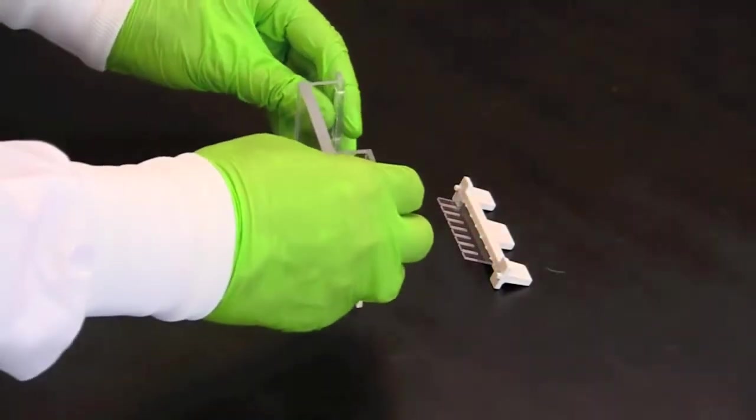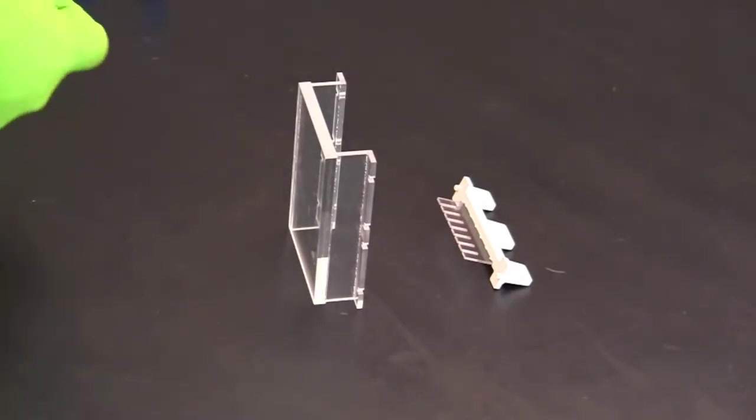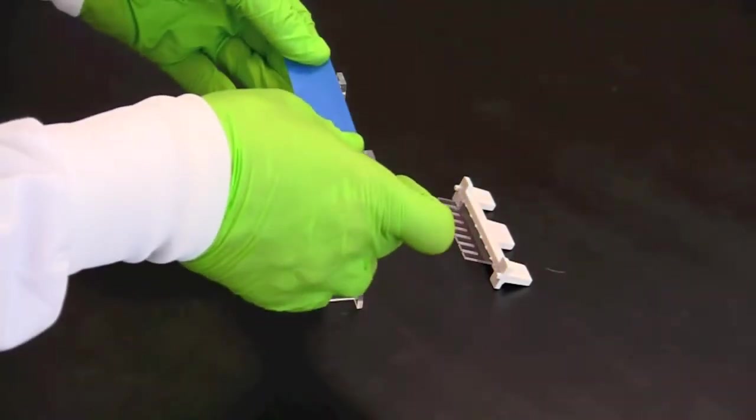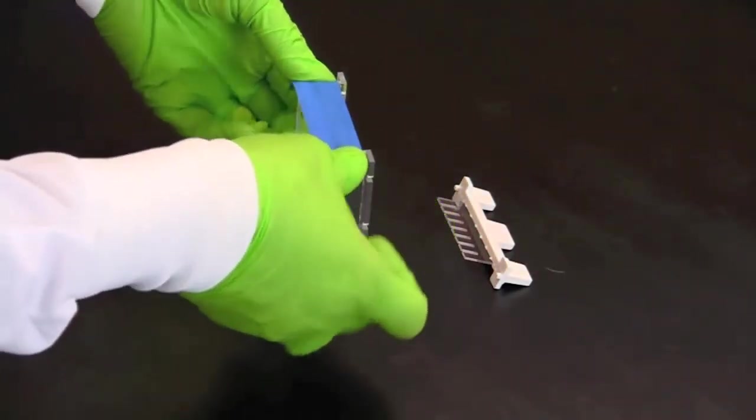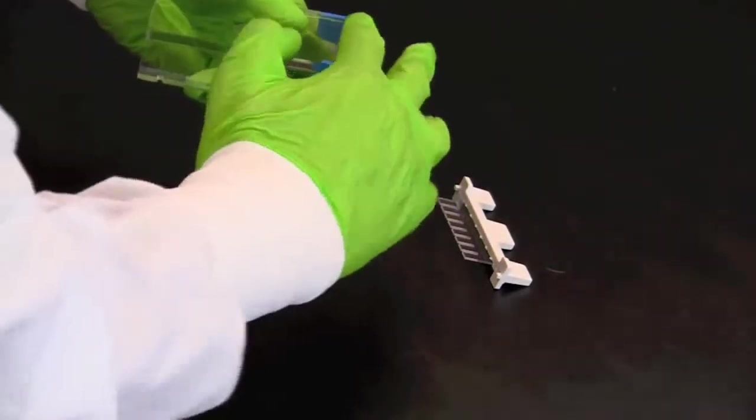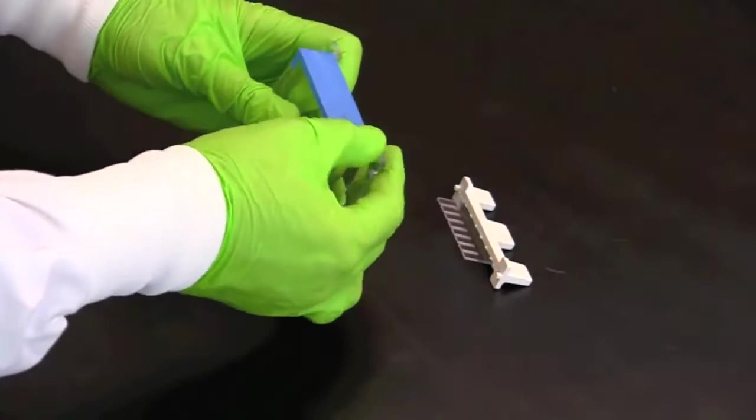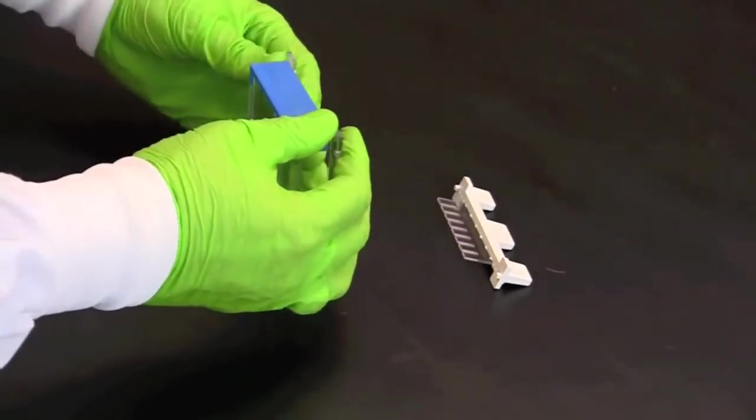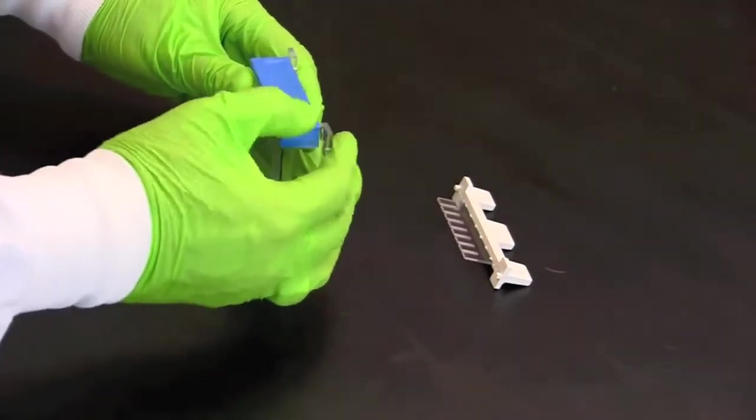Start by taping both ends of a gel tray with laboratory or painters tape, making sure to securely seal the edges of the tray. Press down firmly along each edge of the tape to ensure that there are no leaks.